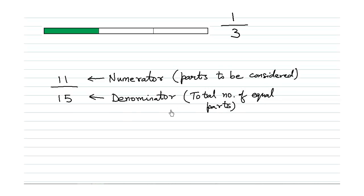So this is pronounced as 11 out of 15, or we can pronounce this as 11 upon 15, or 11 over 15.